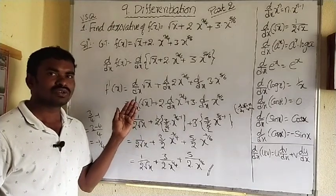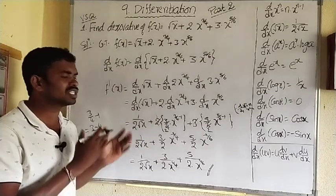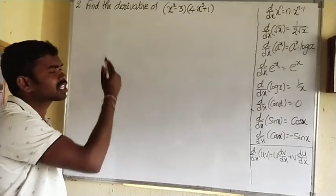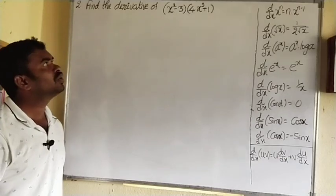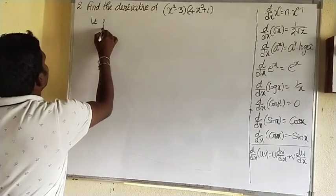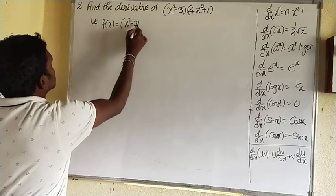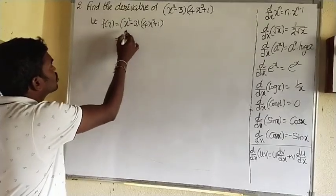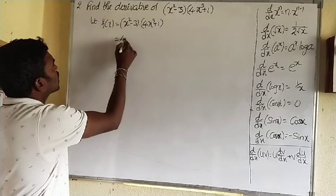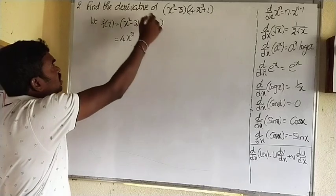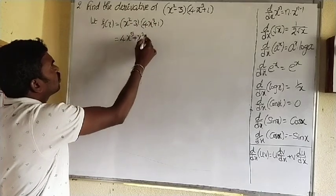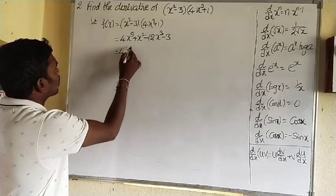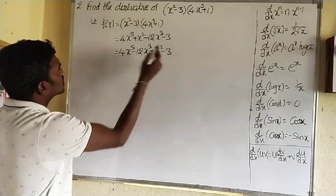This shows how to use formulas to solve problems — a very important concept. Next question: find the derivative of f(x) = (x² − 3)(4x³ + 1). First method: multiply out. x²·4x³ = 4x⁵, x²·1 = x², −3·4x³ = −12x³, −3·1 = −3. So f(x) = 4x⁵ − 12x³ + x² − 3.